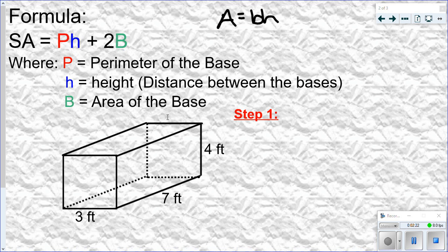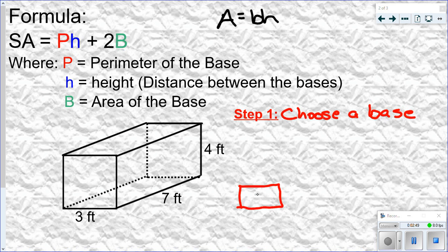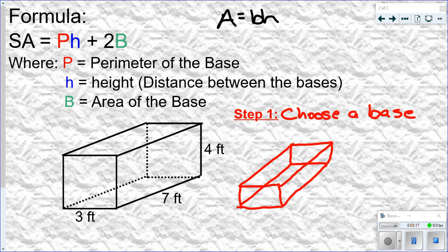All three of these — P, H, and big B — talk about a base. So step one, one of the most important steps, is to choose a base. A rectangular prism is made by starting with a rectangle, creating an exact copy of that rectangle, and connecting the corners. That rectangle is known as the base of the prism. So the base is the rectangle we started with, and connecting the corners gives you the rectangular prism.